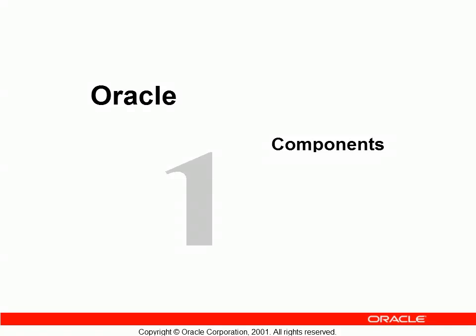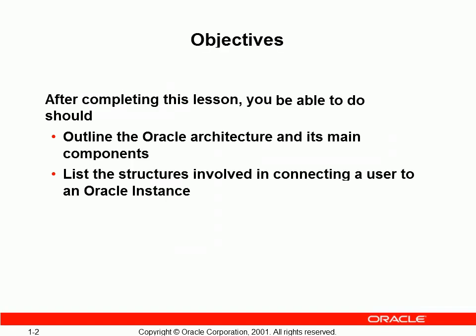An Oracle database is a collection of data treated as a unit. The purpose of a database is to store and retrieve related information. A database server is the key to solving the problems of information management. In this tutorial, we'll show you the primary components of a database.